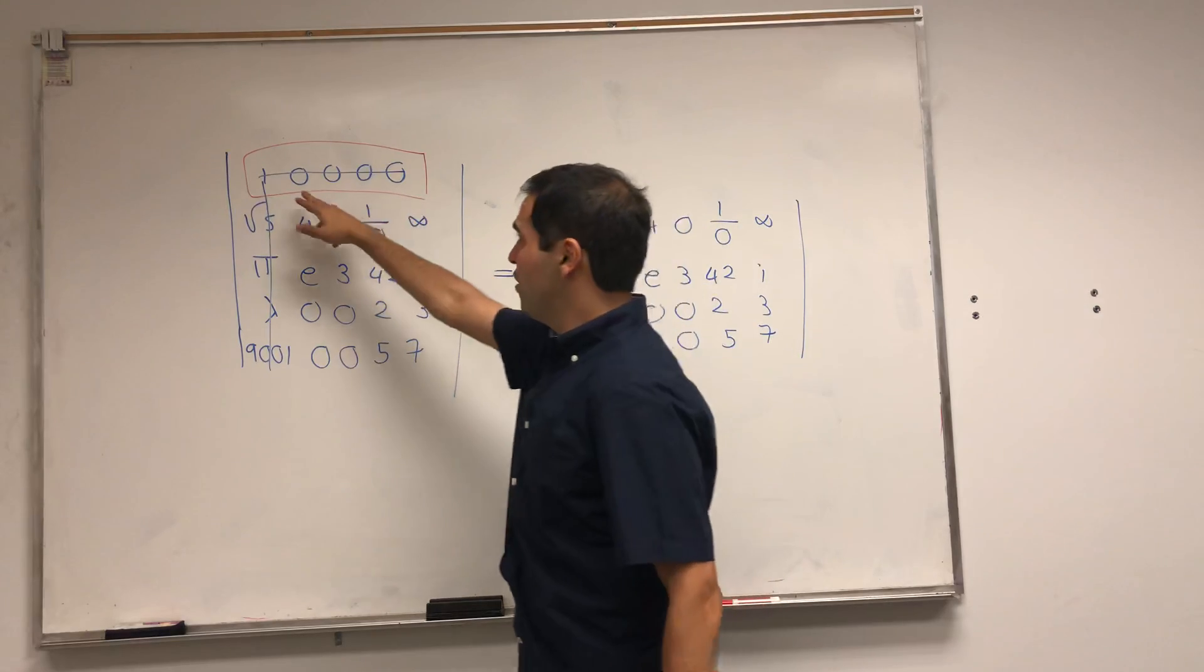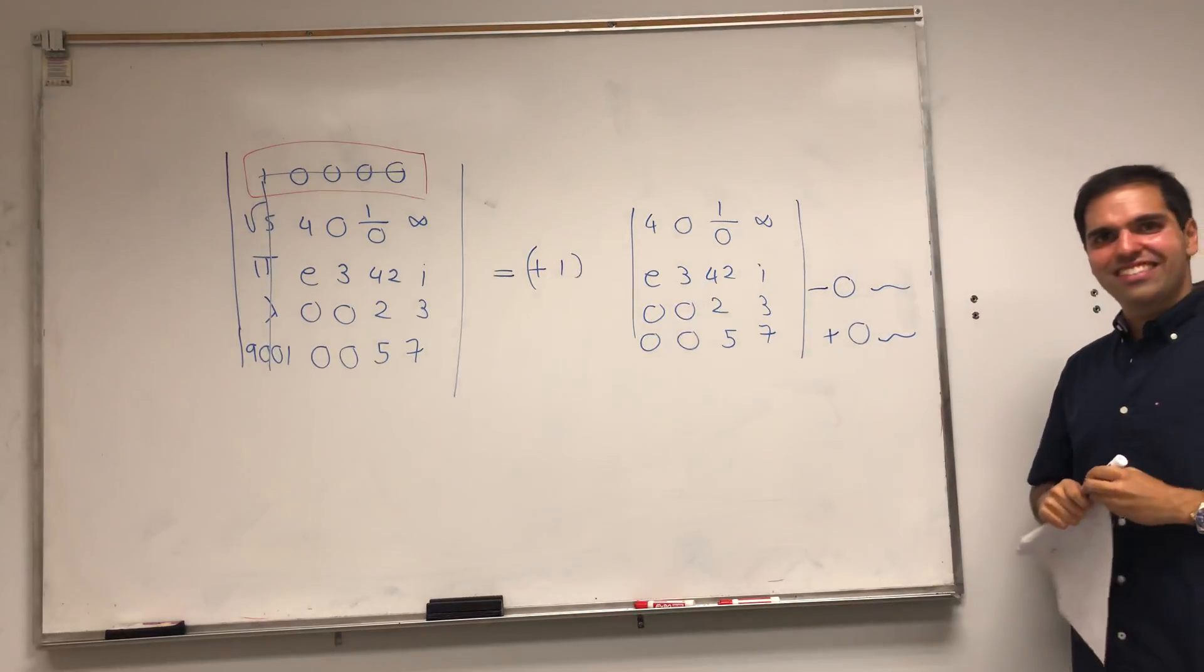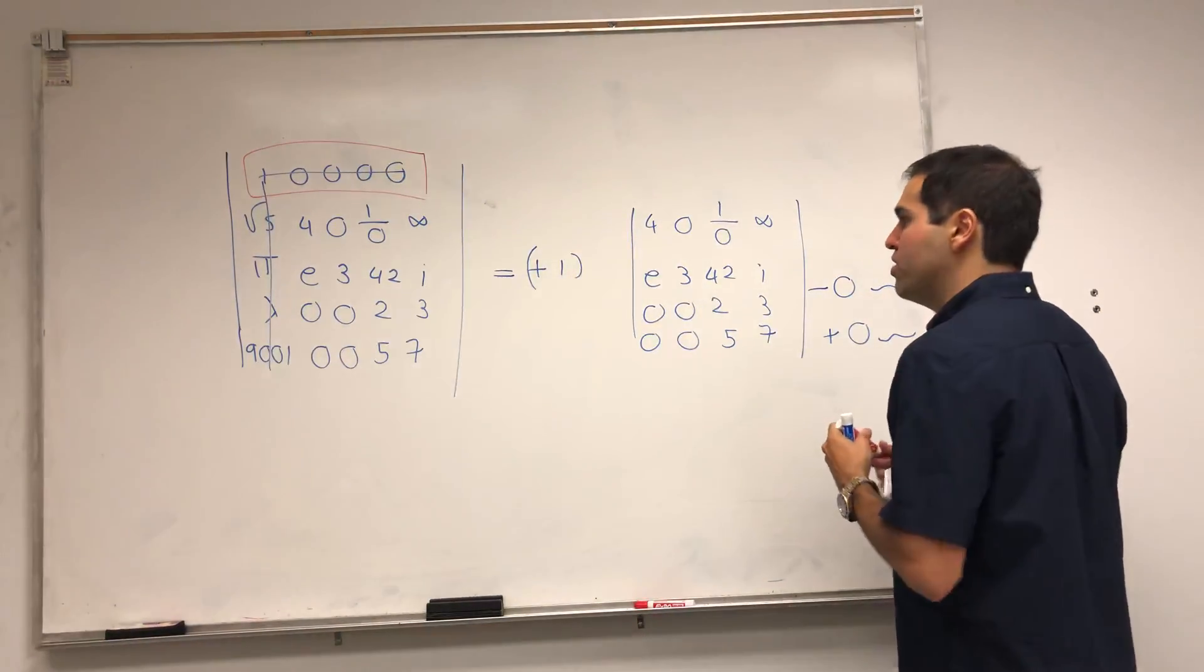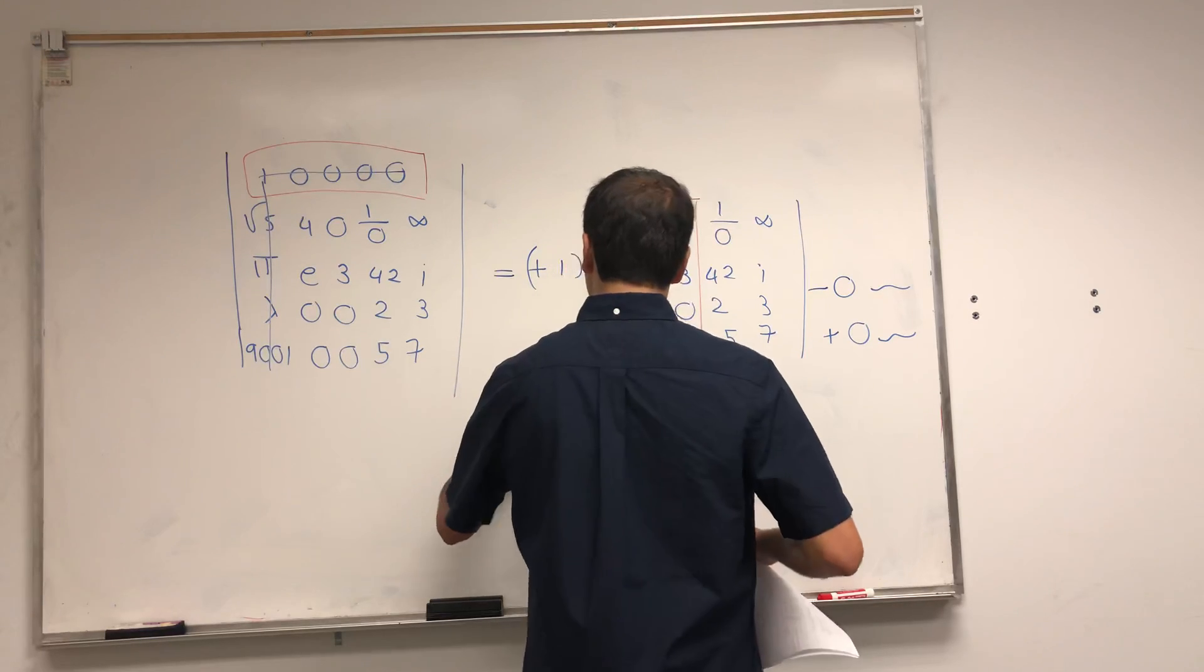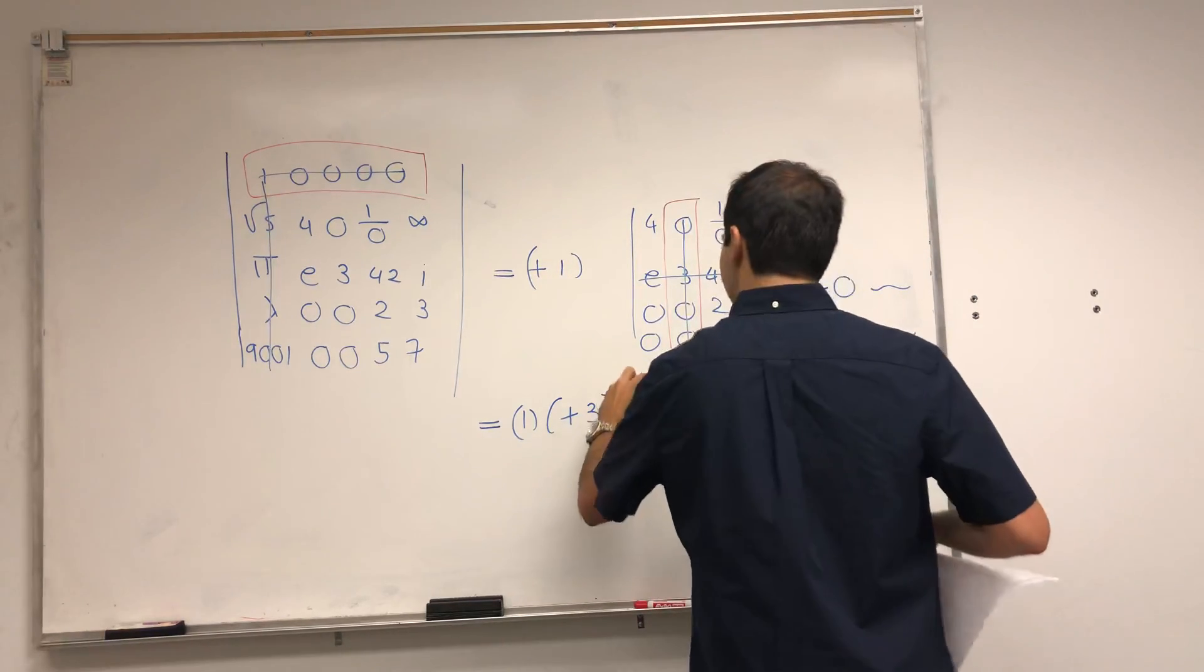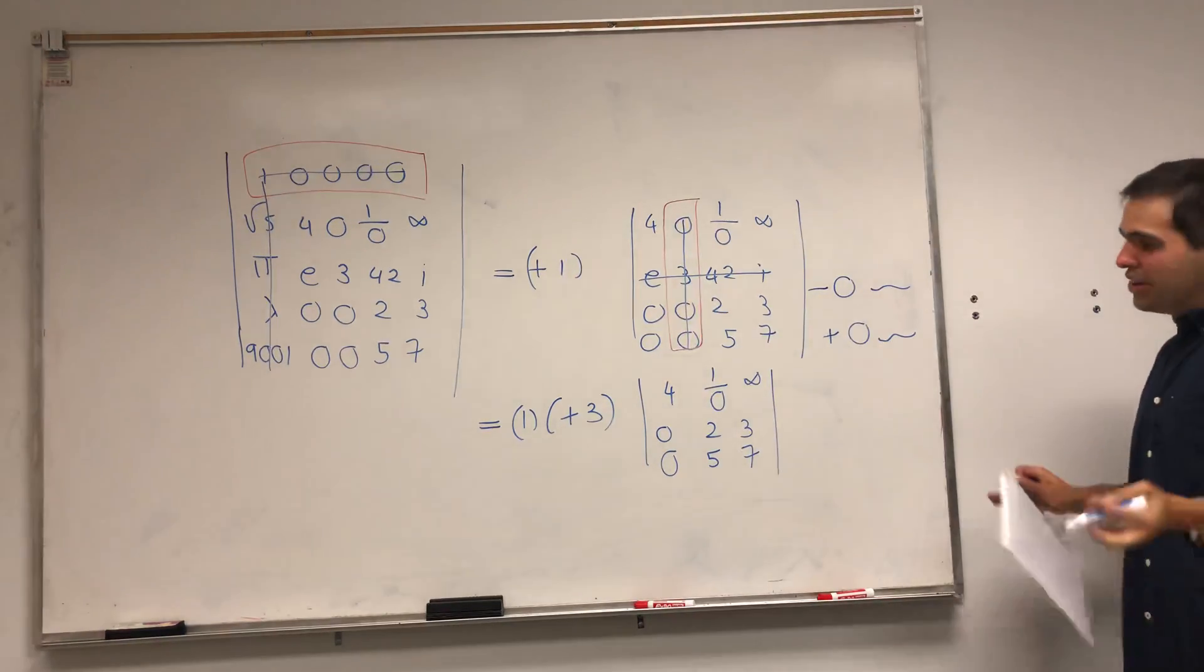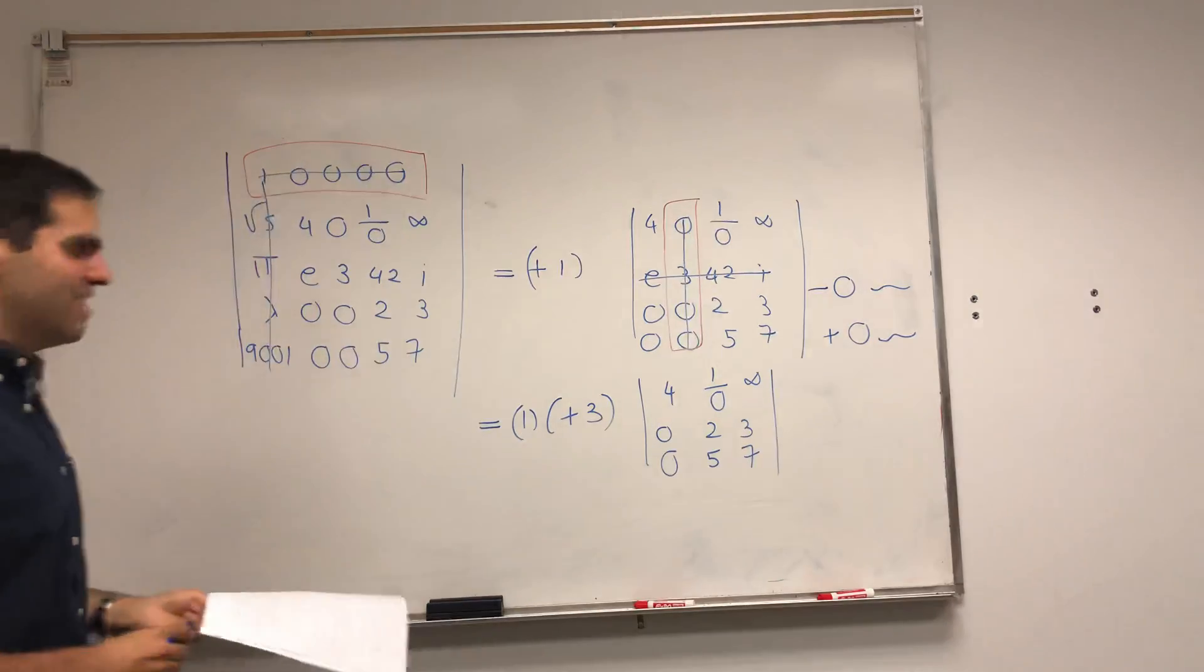And what about the other terms? Well, the next terms would be minus zero times something, plus zero times something, et cetera, et cetera. So they don't even appear in a determinant. That's pretty nice. All right, and so let's continue. Let's choose a row or column with lots of zeros, which, for example, you can choose this column. And so you're left with one times plus minus plus three times the determinant of the rest. So four, one over zero, infinity, zero, zero, two, three, five, seven. Good, we got rid of the i, but honestly I'm still worried about this one over zero and the infinity, but let's see. Let's just continue.